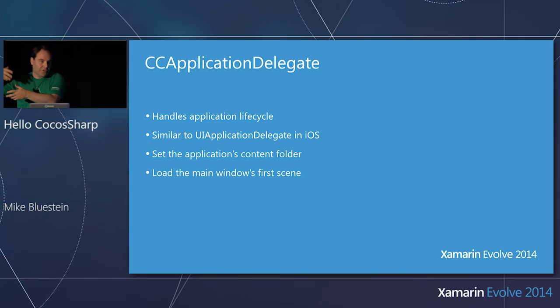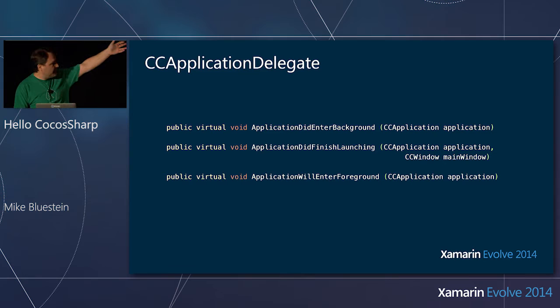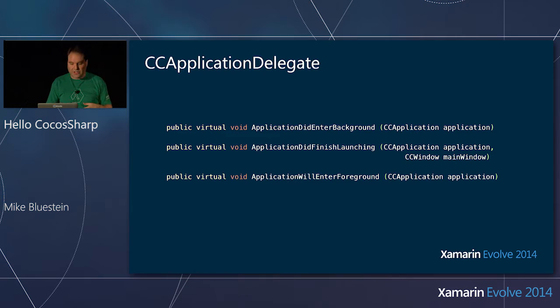Things like when your application moves into the background — what do you have to do state-wise, turning off audio, returning to audio when you move back into the foreground, a little bit of initialization code, such as setting up where the content and resources go in the application, and loading up the first scene. These are the methods you can implement in CC Application Delegate to handle the lifecycle.